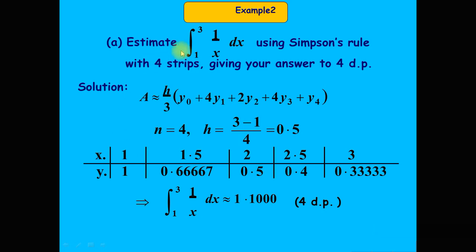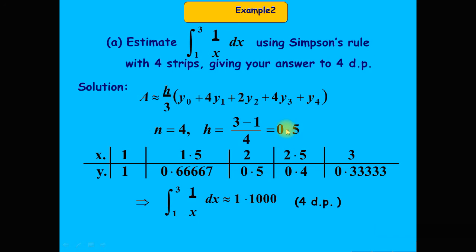Putting x = 1 into y = 1/x gives y₀ = 1. Adding the step size 0.5 gives x = 1.5, and substituting gives y₁ = 0.66667. Adding again gives x = 2, and substituting gives y₂ = 0.5.